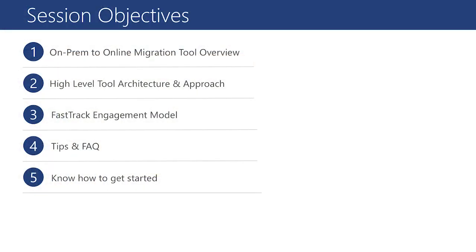For today's session, I want to share our newly added FastTrack service called CRM On-Premise to Dynamics 365 Migration Service. In this session, we will learn about the On-Premise to Online Migration Tool overview along with challenges. Then you will hear about the high-level architecture along with the overall approach to migrate to Dynamics 365 Online. Subsequently, we will discuss how FastTrack can help with the programmatic FastTrack engagement model. Additionally, I will cover quick tips on the migration tool and frequently asked questions.